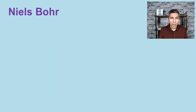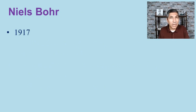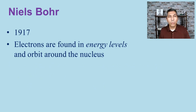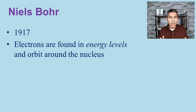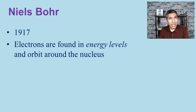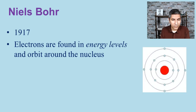Moving forward to around 1917, Danish physicist Niels Bohr showed that electrons are not randomly scattered. Instead, they are found in specific energy levels and orbit around the nucleus — giving us the Bohr model of the atom.